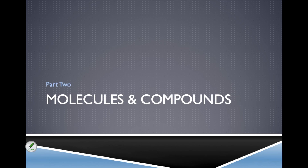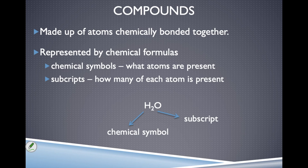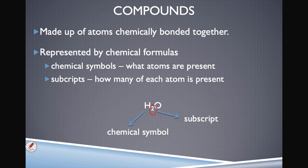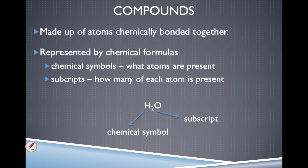When two or more atoms or ions combine, we start to form molecules and compounds. Just like we represent atoms or elements by using their chemical symbols, so we don't have to write out big long words, we also represent compounds with something called a chemical formula. A chemical formula makes use of the chemical symbols for the various elements in the compound, as well as subscripts — the little numbers written in the chemical formulas that tell us how many of each particular element is present.